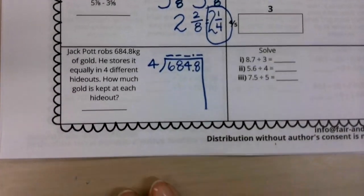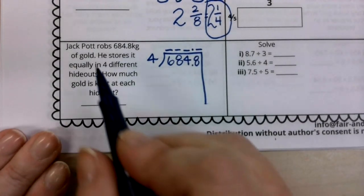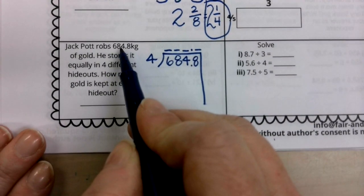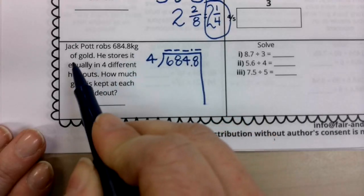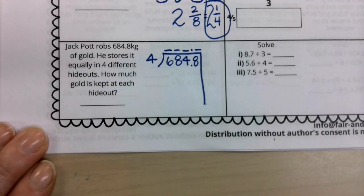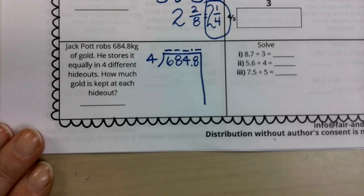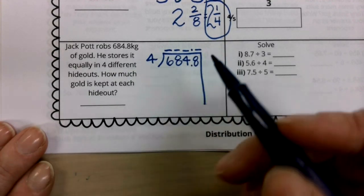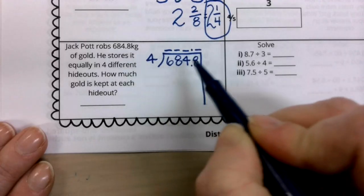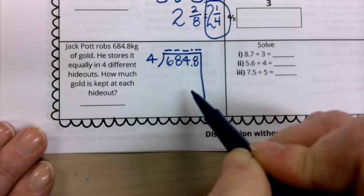The last question for today says jackpot robs 684 and eight tenths of a kilogram of gold, who stores it equally in four different hideouts. How much gold is kept at each hideout? This is what we are to figure. Now, boys and girls, remember when we have worked with this in the past? We've talked about the fractions in some different ways. One way that we talked about was really we can take care of our decimal first and then we can divide.